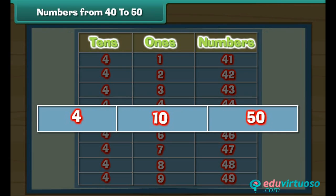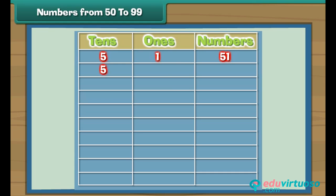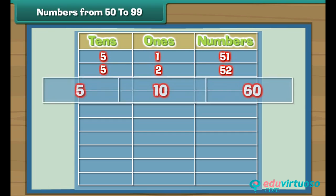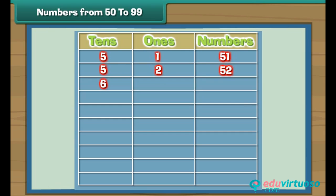Four tens and ten give five tens, that is 50. Numbers from 50 to 99. Let us now complete one more table. Five tens and one give 51, five tens and two give 52, five tens and ten is 60. Six tens and three give 63.